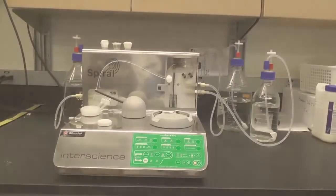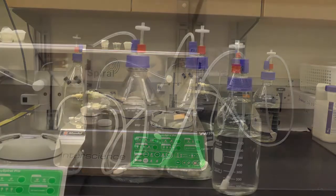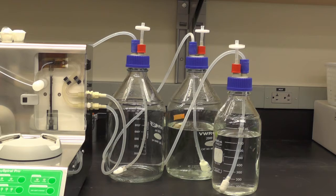In this video you will learn how to use an automatic spiral plater, the easySpiral automatic spiral plater. There are three bottles attached to this instrument including a disinfectant bottle, a sterile DD water bottle, and a waste bottle.